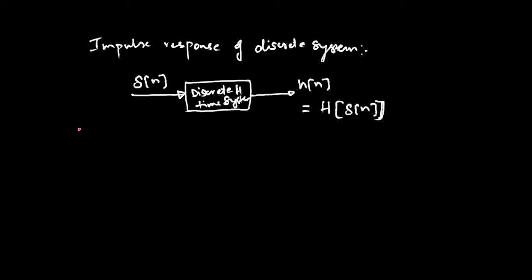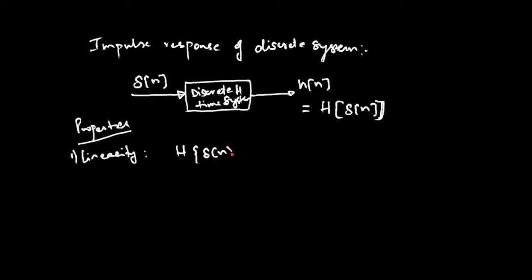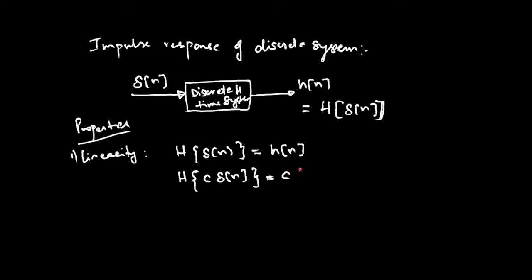Let's look at some of the properties of impulse response which you must be aware of. The first is the linearity property: if you know that the impulse response of delta of n is h of n, then if you scale it by some constant c, the impulse response of c times delta of n will be equal to c times h of n.